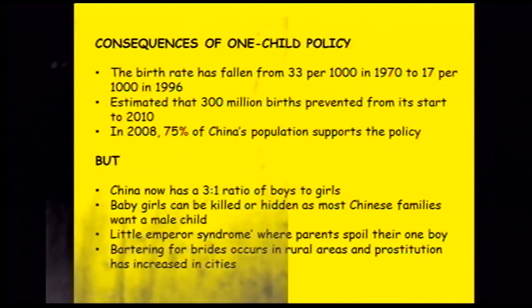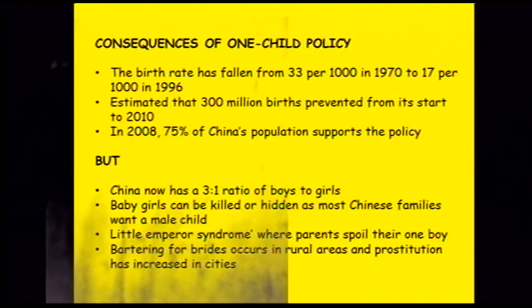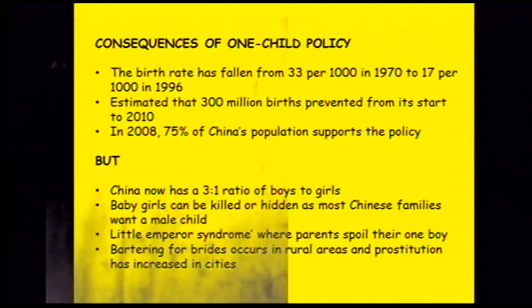There are quite a few negatives though. China has a ratio of three boys to every one girl, so in the future the boys will find it difficult to find a marriage partner, and the population could drastically decrease very quickly. Baby girls are often killed or hidden because Chinese families want a male child to carry on the family name and go out to work. There is also 'little emperor syndrome' where parents spoil their only child because they are only allowed that one child.